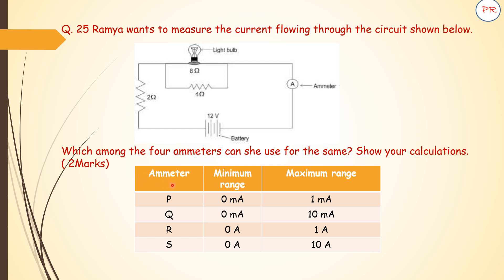There are 4 ammeters: P, Q, R, and S. For P, minimum range is 0 mA and maximum range is 1 mA. For Q, minimum is 0 mA and maximum is 10 mA. For R, minimum is 0 mA and maximum is 1 A. For S, minimum range is 0 mA and maximum range is 10 A.